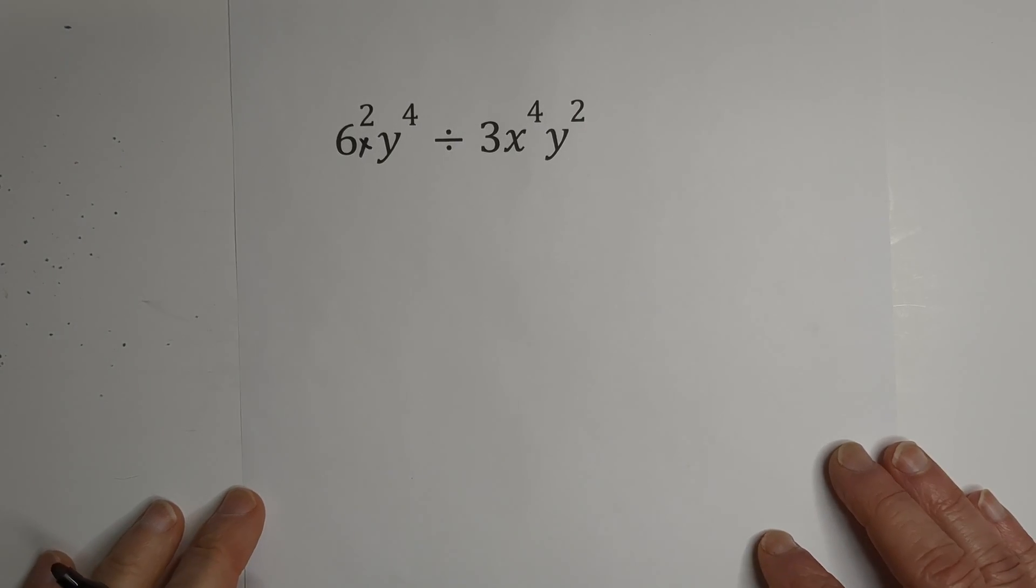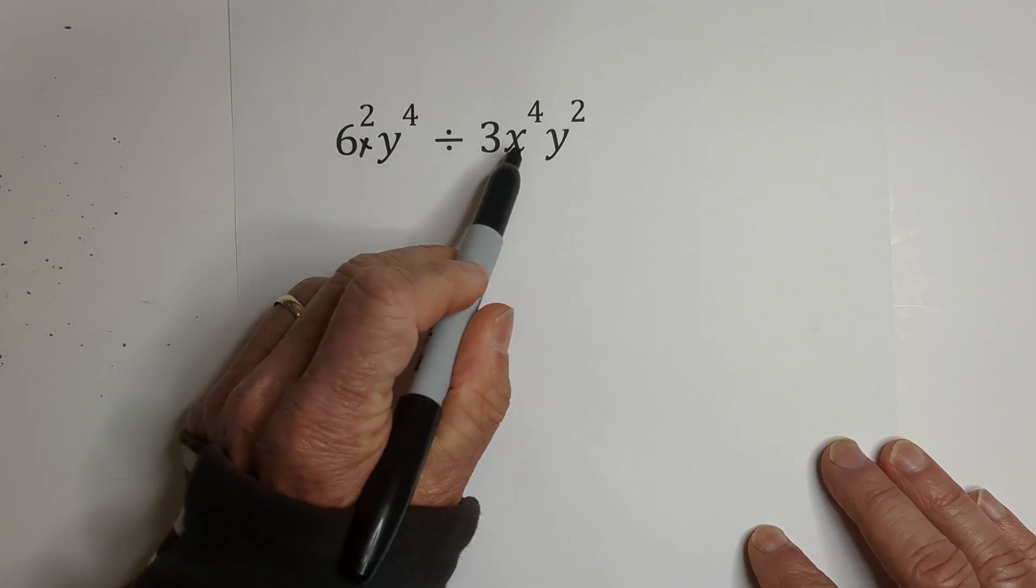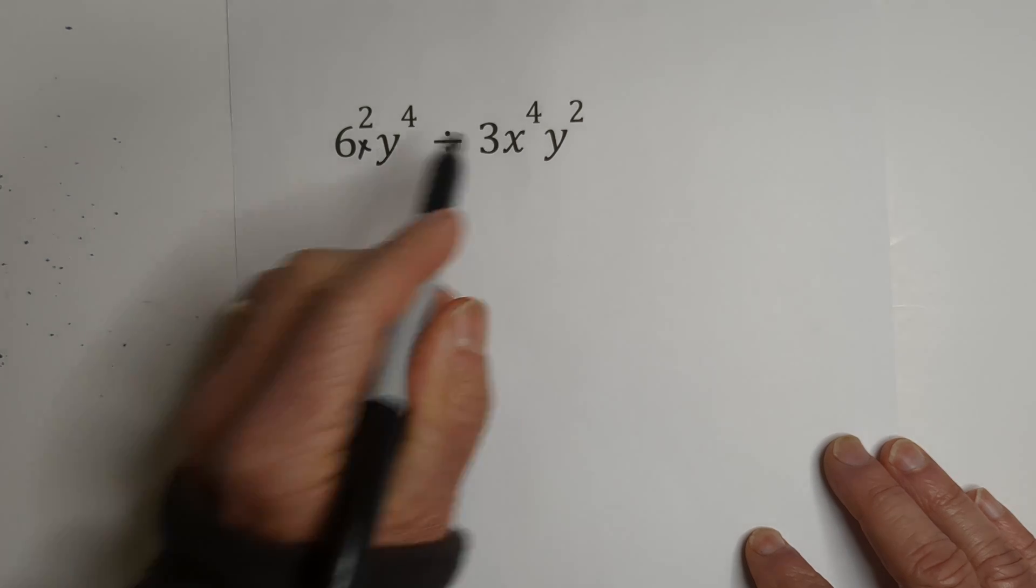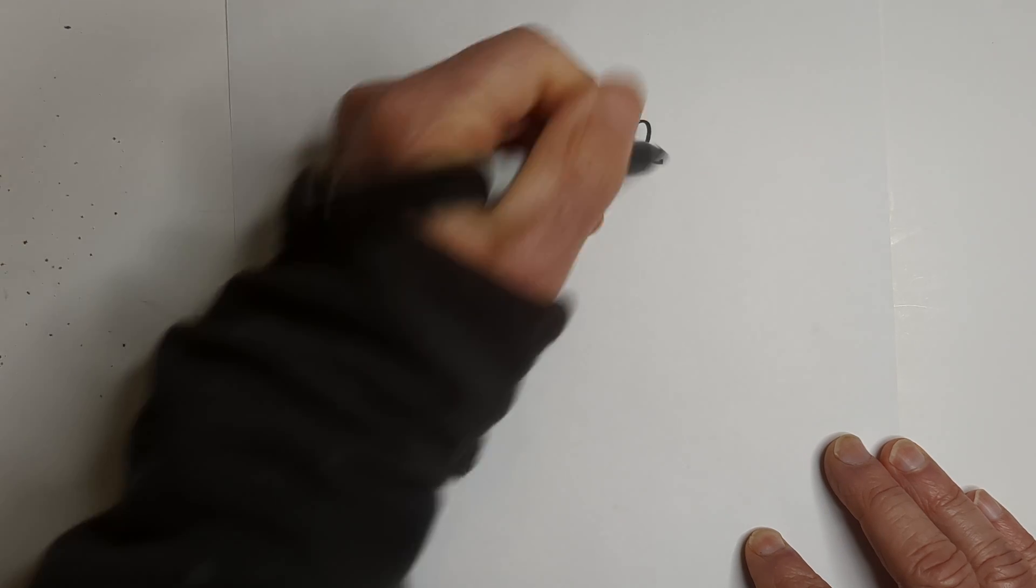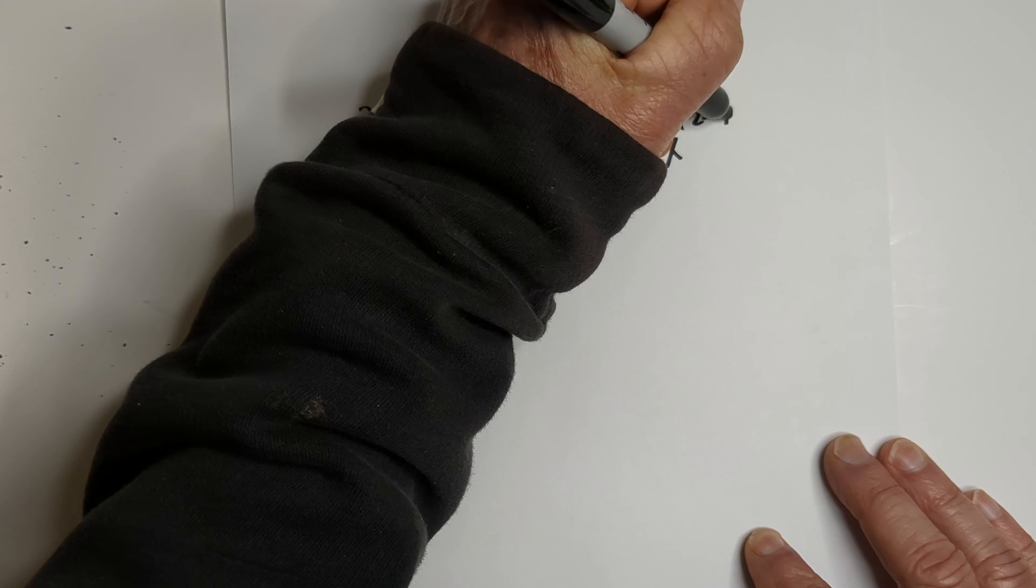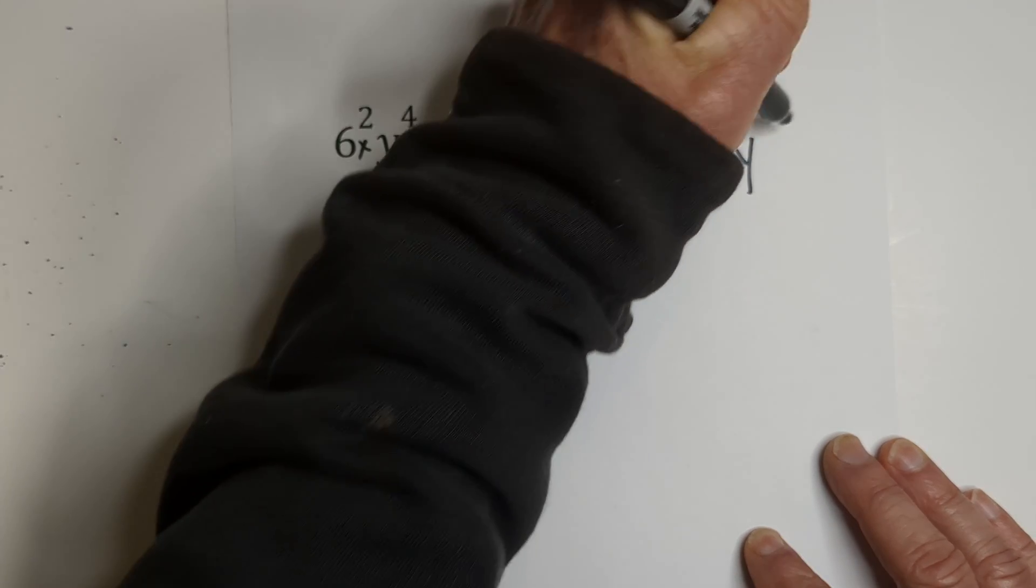And let's look at one more. Do we have similar bases? Yes, we have X and X, Y and Y. So let's start dividing. So we have 6 divided by 3 is 2. We have X and then we have 2 minus 4. And then we have Y and we have 4 minus 2.